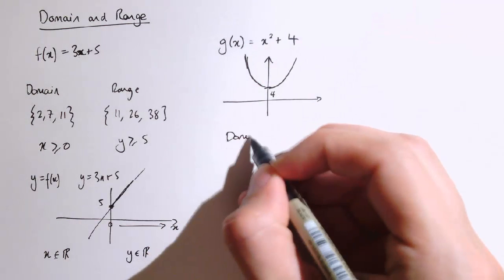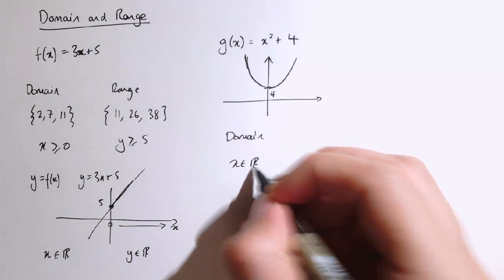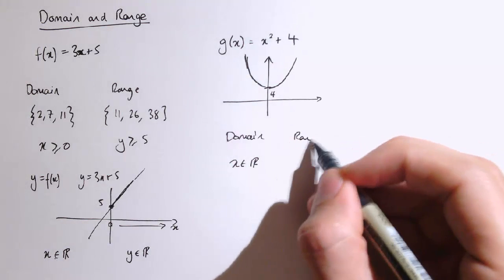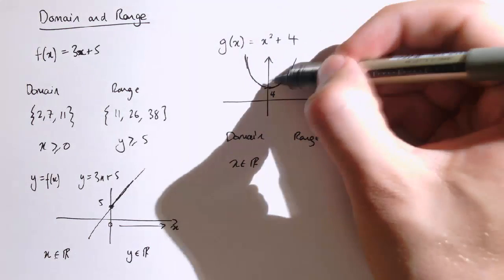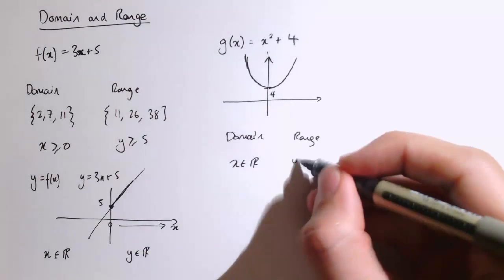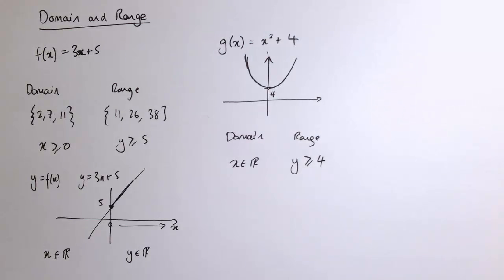Here if we had a domain where we had all of the real numbers, i.e. we can put anything into it, the only possible outputs are y values that are bigger than or equal to 4. Even with all the possible x values, those are the only outputs we can get.